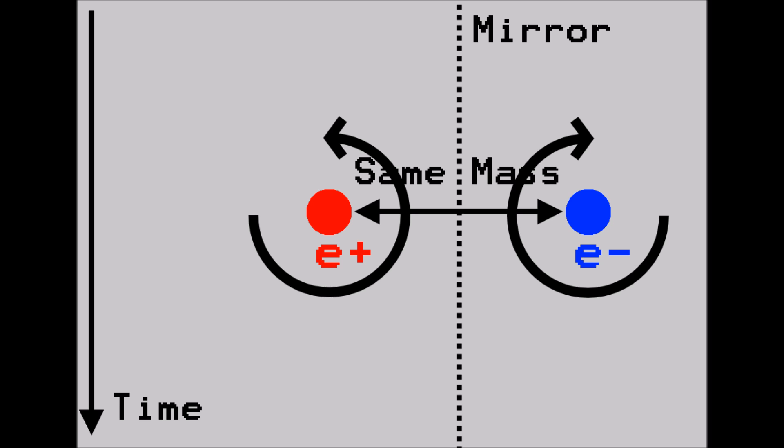This mirror image, so Feynman proposed, is what we know of as antimatter. Normal matter travelling backwards through time. End of side note two.